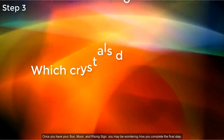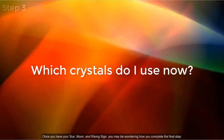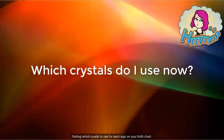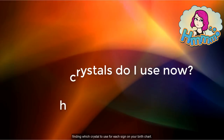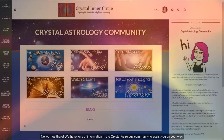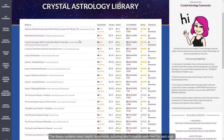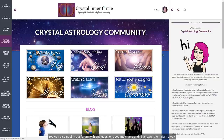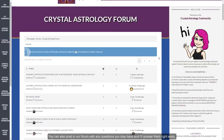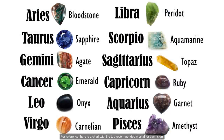Once you have your sun, moon, and rising sign, you may be wondering how to complete the final step — finding which crystal to use for each sign in your birth chart. No worries, we have tons of information in the Crystal Astrology community to assist you. The library contains many helpful documents, including which crystals work best for each sign. You can also post on our forum with any questions you may have, and I'll answer them right away. Here is a chart with the top recommended crystal for each sign. Keep in mind there are often multiple stones associated with each sign, but the ones shown here are the most agreed upon.